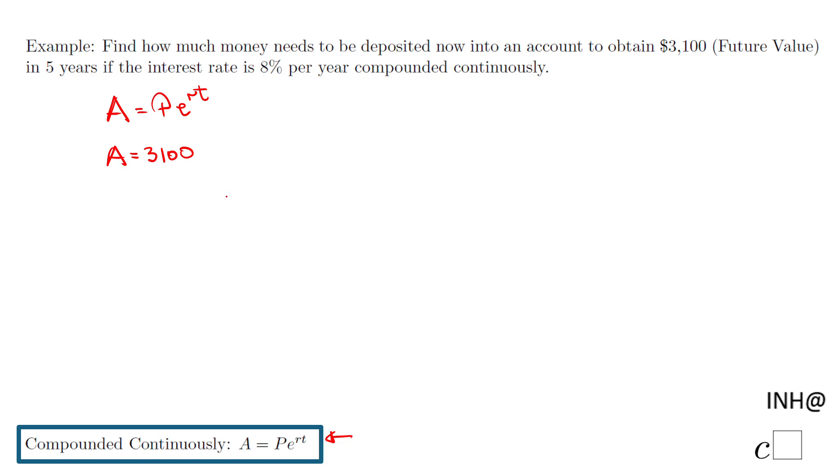Then P is the gentleman we need to find out. R is the rate, and in our case is 8%. We're going to change that to a decimal, 0.08. And then we have the number of years we're going to keep that money, which is 5 years.